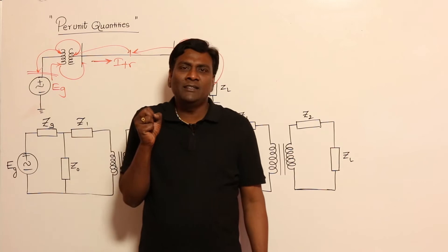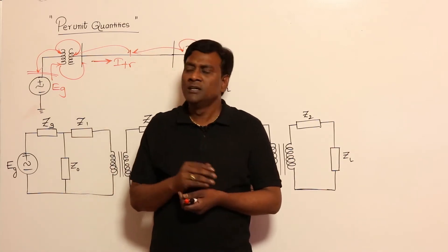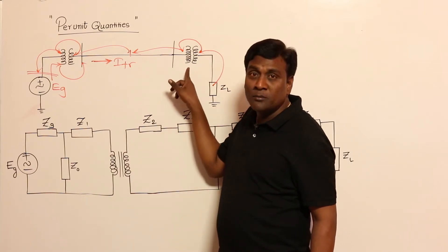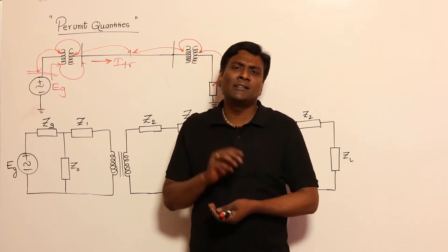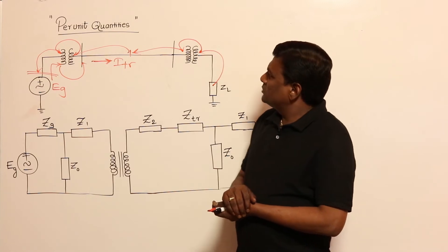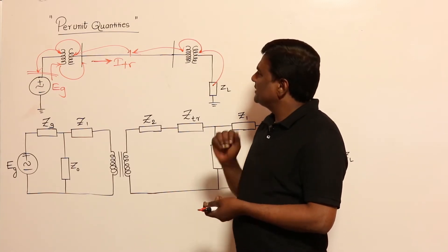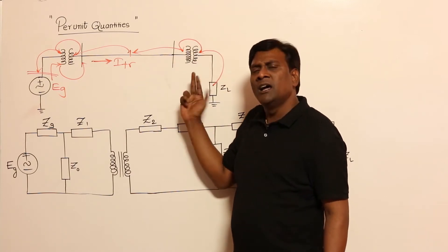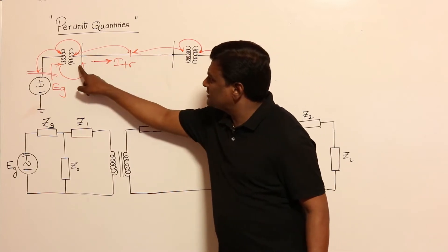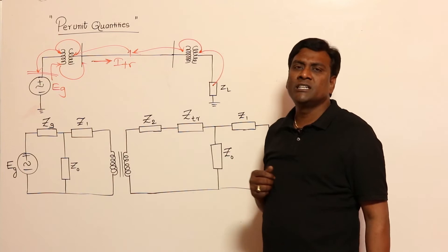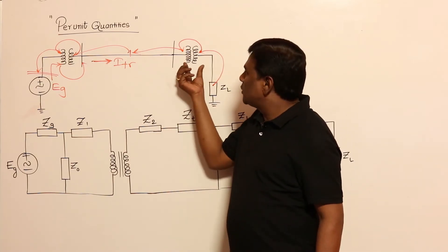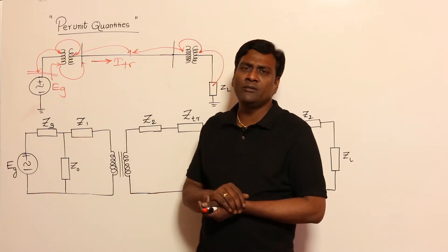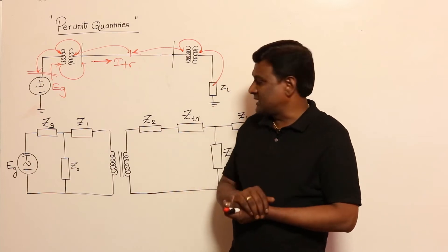The main difficulty here is the transformation ratios of the transformers. Without transformers the physical AC power system cannot exist, but because of transformers, analysis on paper becomes very complicated for load flow studies. Our purpose with per unit quantities is this: if we can eliminate the transformer not from the physical world, but on paper for analysis, then we can simply add all impedances directly without reflecting from LV to HV or HV to LV.